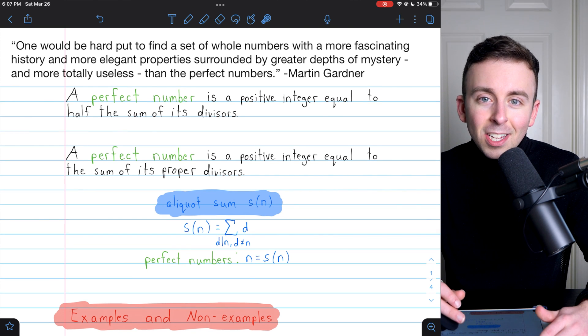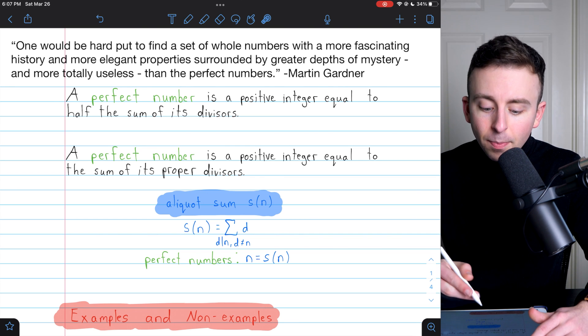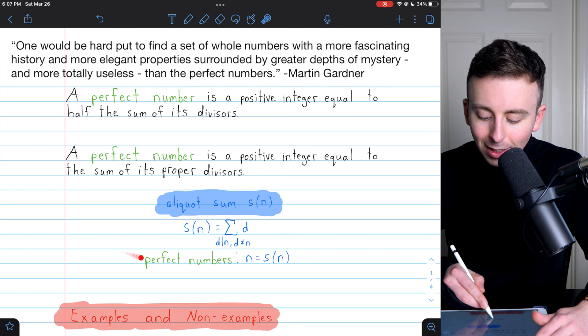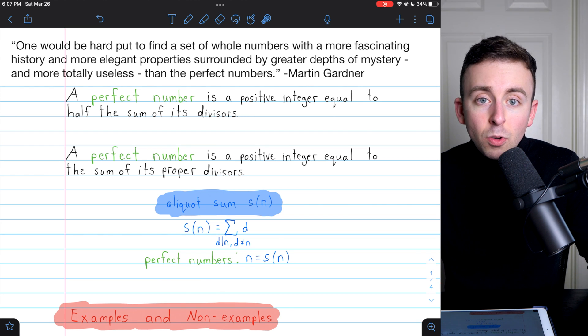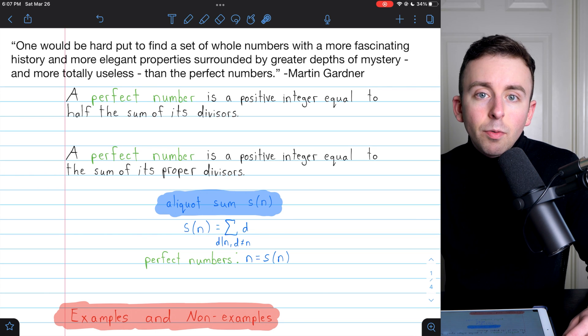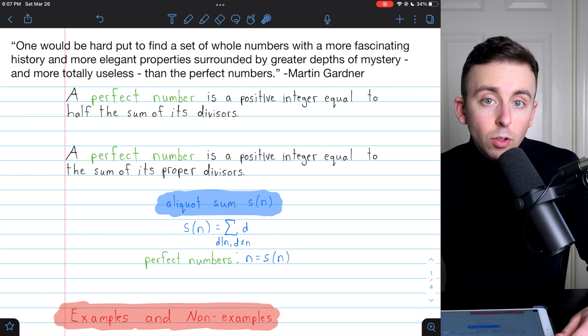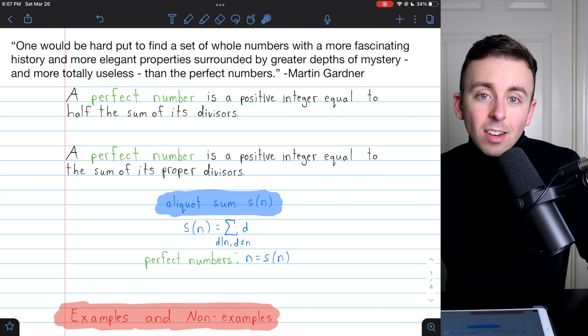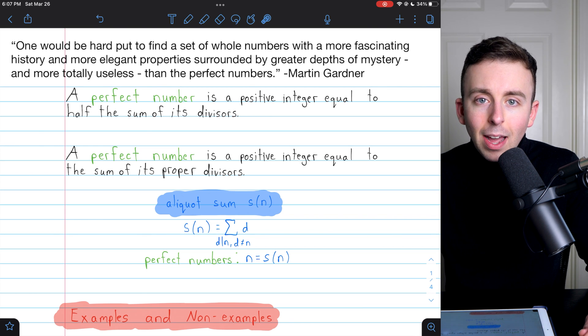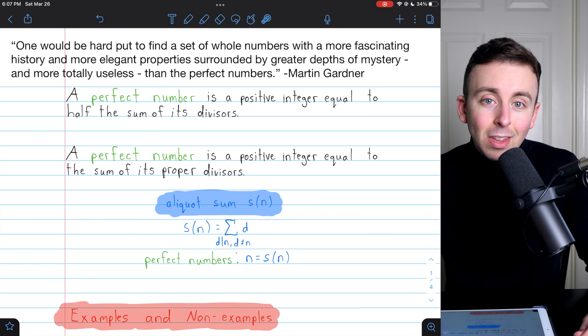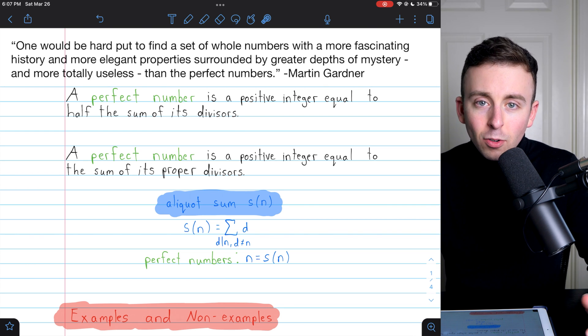The most pressing question is, what are perfect numbers? Here, I've put what are basically three equivalent definitions of perfect numbers. They all come down to the divisors of a number. The divisors of 10, for example, are 1, 2, 5, and 10, although we would say that 10 is not a proper divisor of 10. Proper divisors are divisors that are less than the number in question.